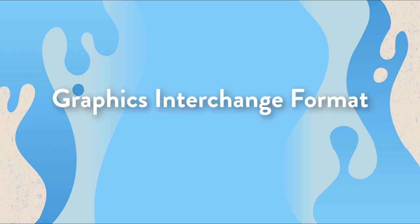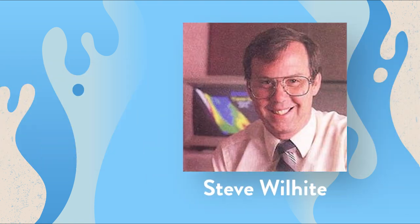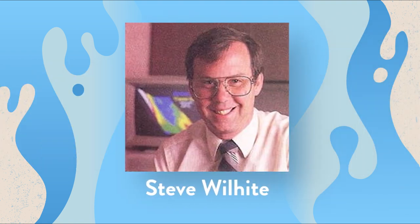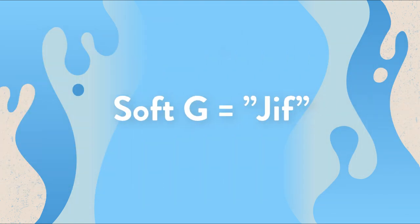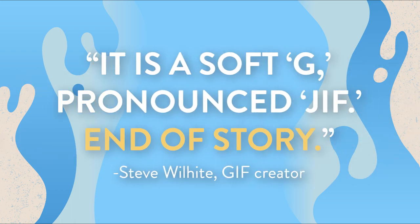The Graphics Interchange Format, GIF, was developed in 1987 by a guy called Steve Wilhite. It was originally pronounced with a soft G as 'JIF', but a lot of people now call it 'GIF' with a hard G. But the guy who created it keeps trying to remind people that it's a soft G — 'JIF', not 'GIF'. He even made a GIF about it!